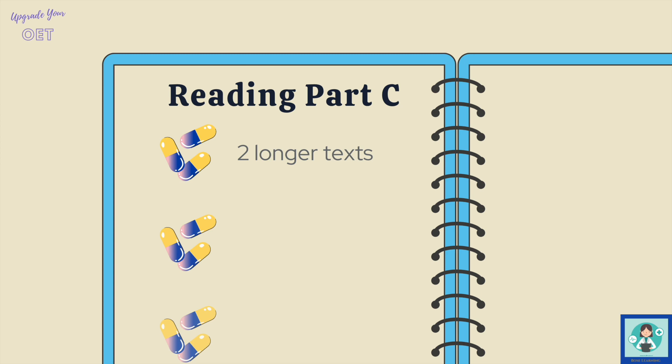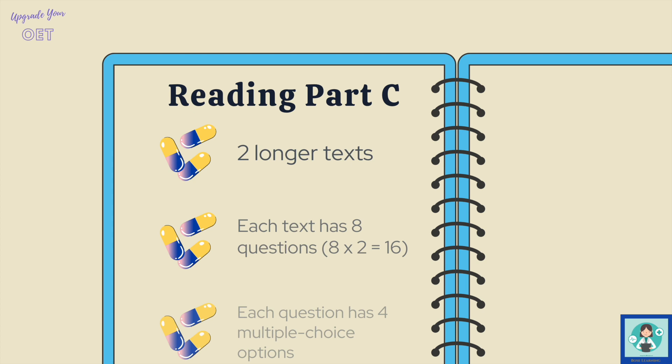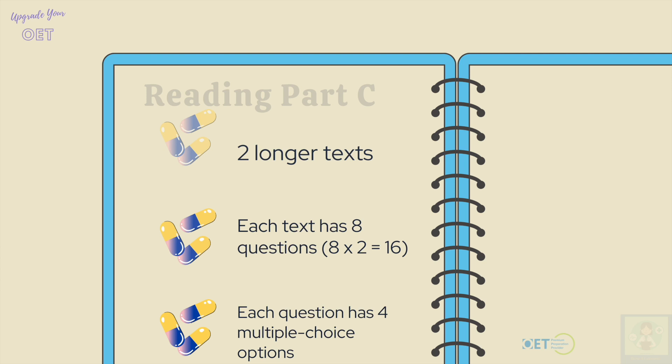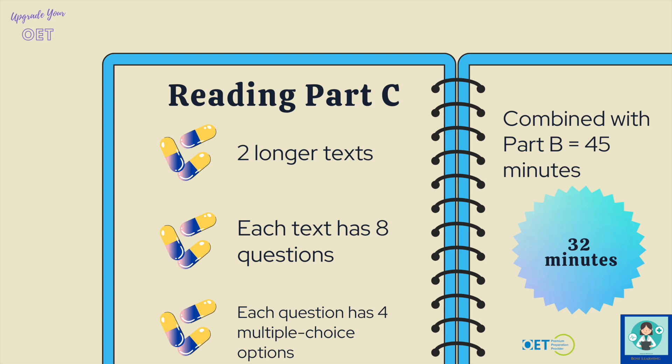In part C you're going to be given two longer texts — the kinds of texts you would read for professional development, so general medical interest texts. Each text has eight questions, giving you 16 questions in total, and each question has four multiple choice options. You're given parts B and C together with 45 minutes in total, so for part C you need to spend around 32 minutes, which works out to two minutes per question.